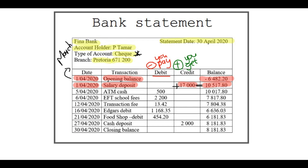On the 5th of April, he withdrew 500 Rand from the ATM, so he has 500 Rand less. You take the last balance of 10,500, subtract 500 because it is a debit amount, and you get 10,017 Rand.